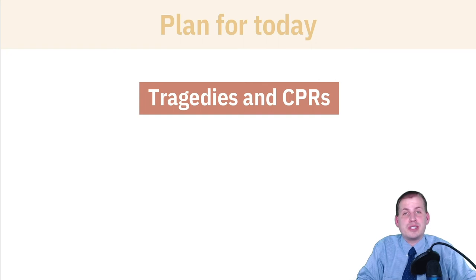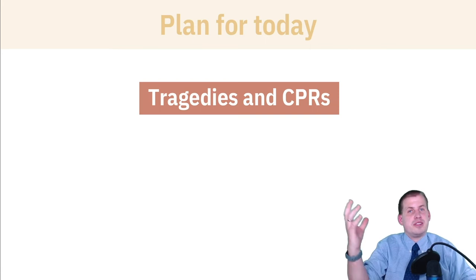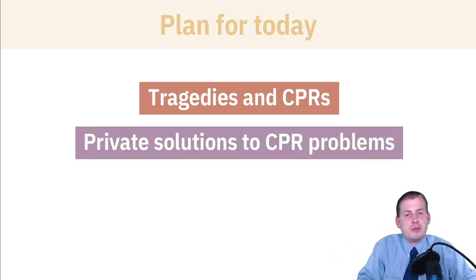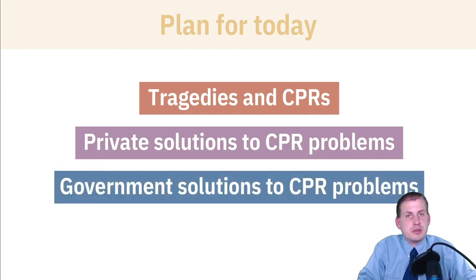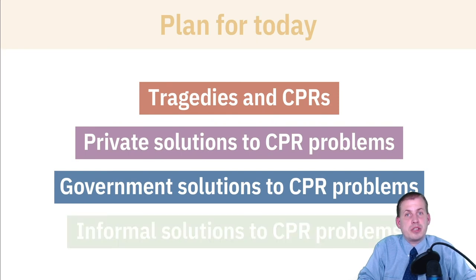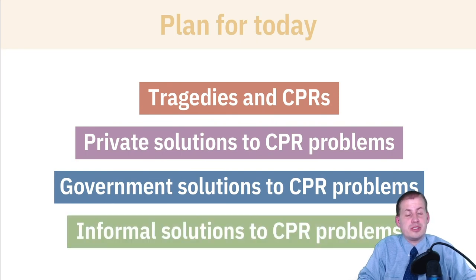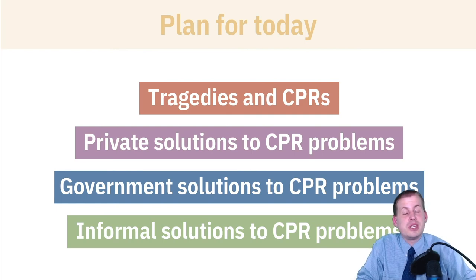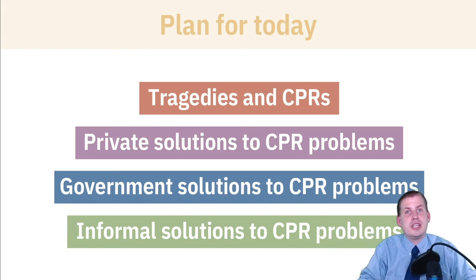What I'm proposing today is that you don't necessarily need to rely on the public sector to fix all market failures. We'll look at private solutions to common pool resource problems, some government solutions to common pool resource problems, and then we'll conclude with looking at some informal solutions that don't use the private sector and don't use official governments — they instead use informal institutions and community norms to fix market failures, with some specific examples of how that has worked in practice.